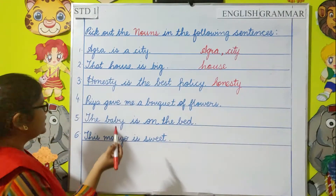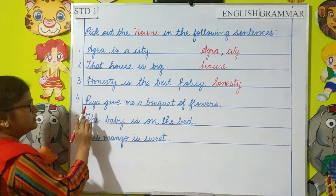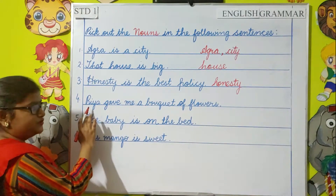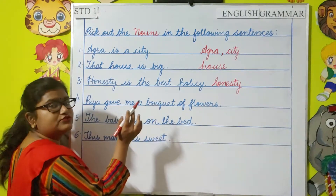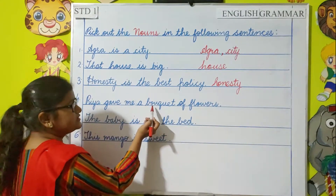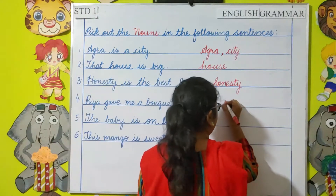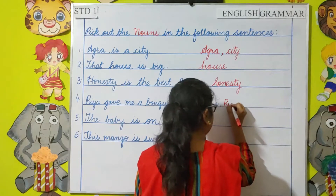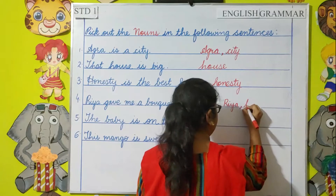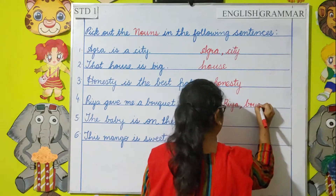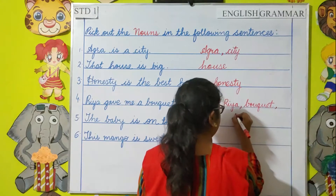Next: Rhea gave me a bouquet of flowers. So Rhea is a proper noun. Bouquet is a collective noun because it is a group of flowers. And flowers is a common noun. So I will write: Rhea, bouquet, flowers.